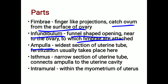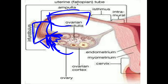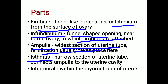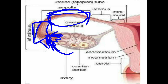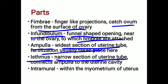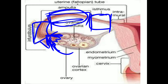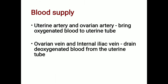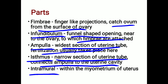The ampulla is the widest section of the uterine tube, having the largest diameter. Fertilization usually takes place here in the ampulla. The fourth part is the isthmus, which is the narrow section of the uterine tube, and it connects the ampulla to the uterine cavity.